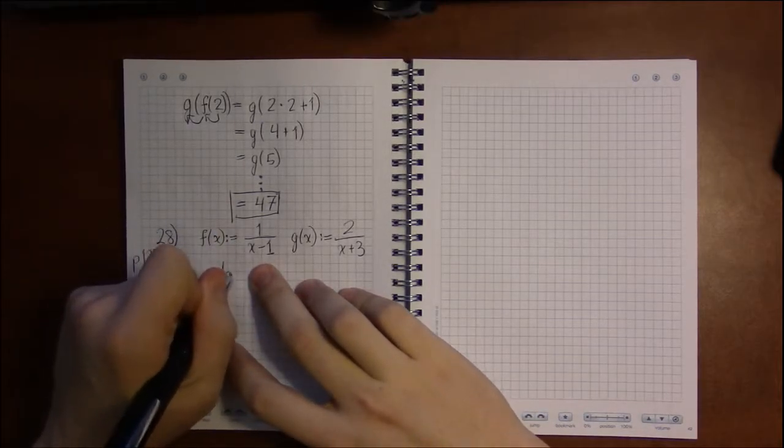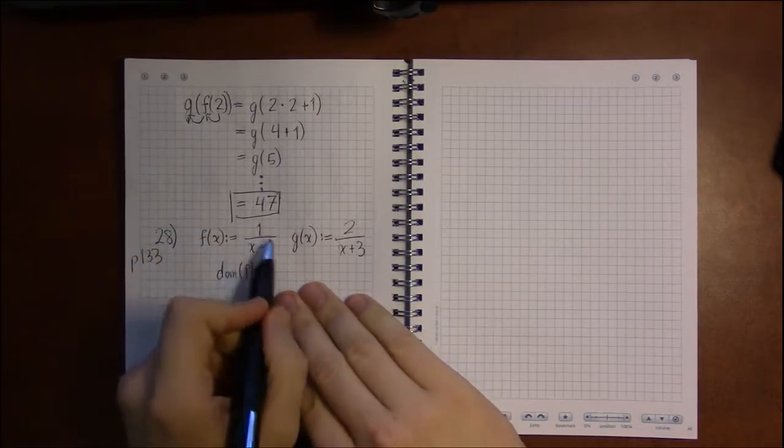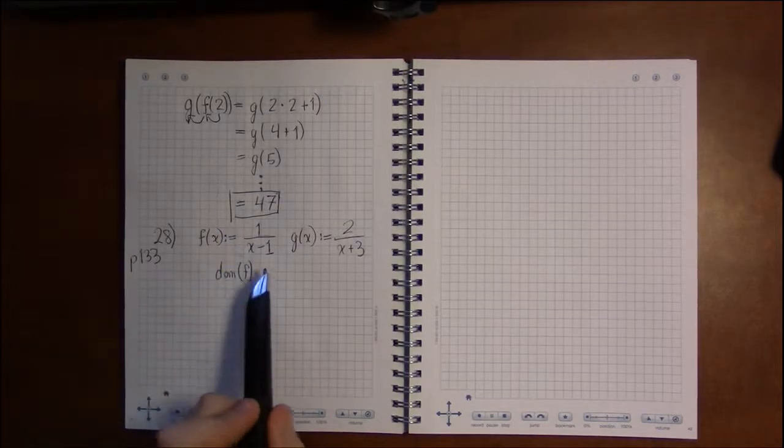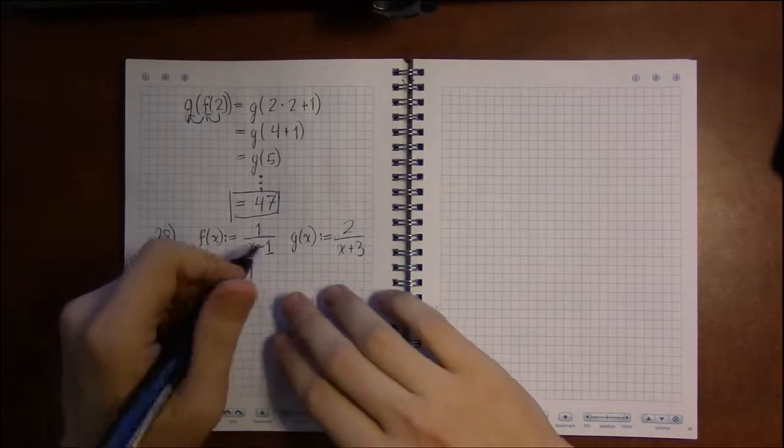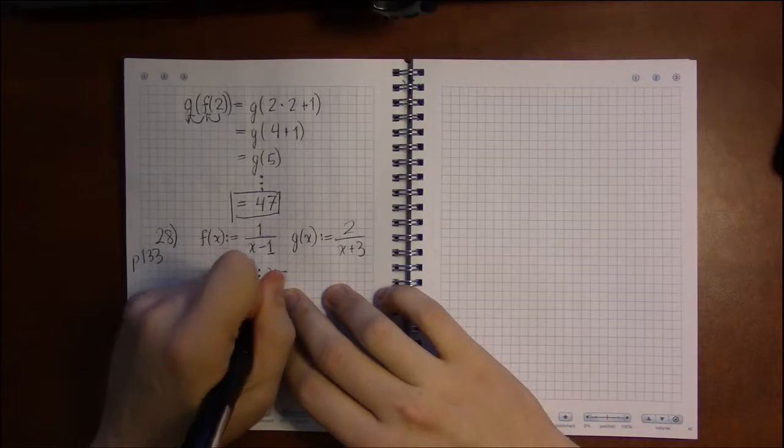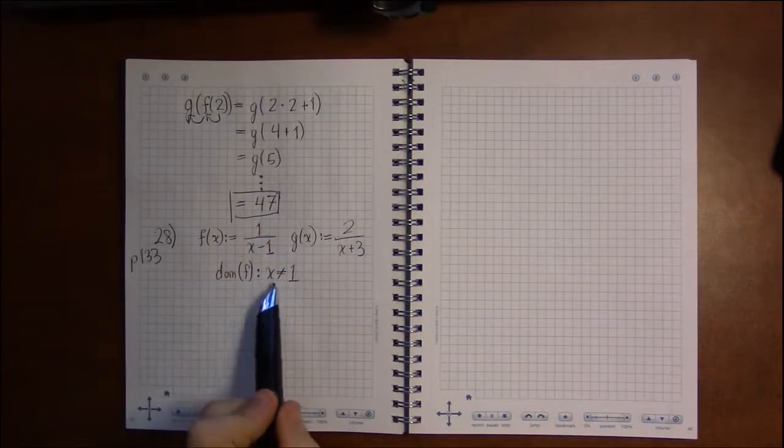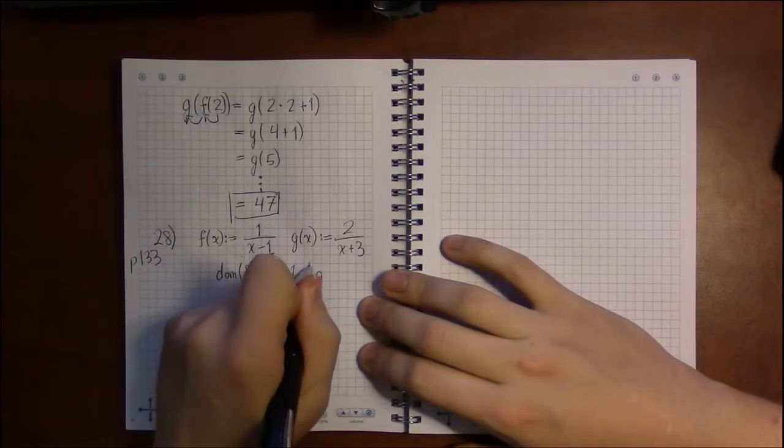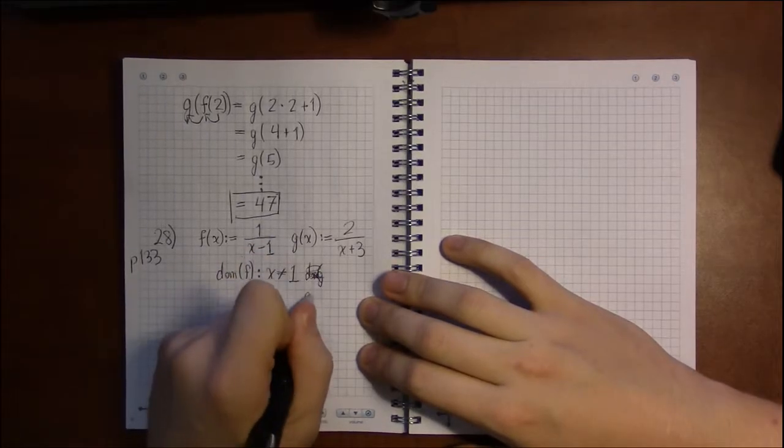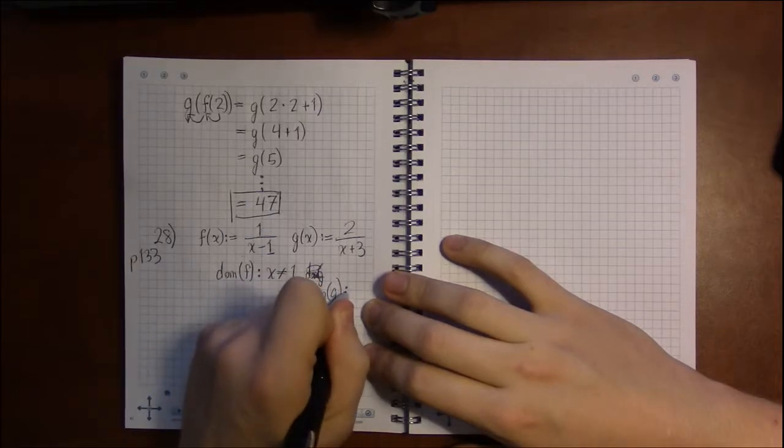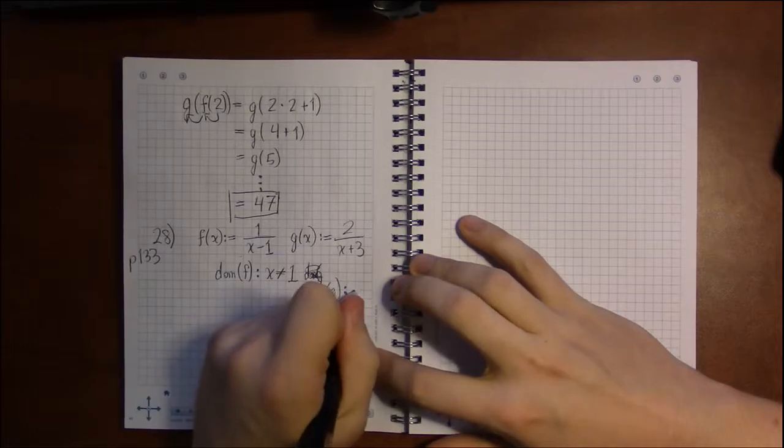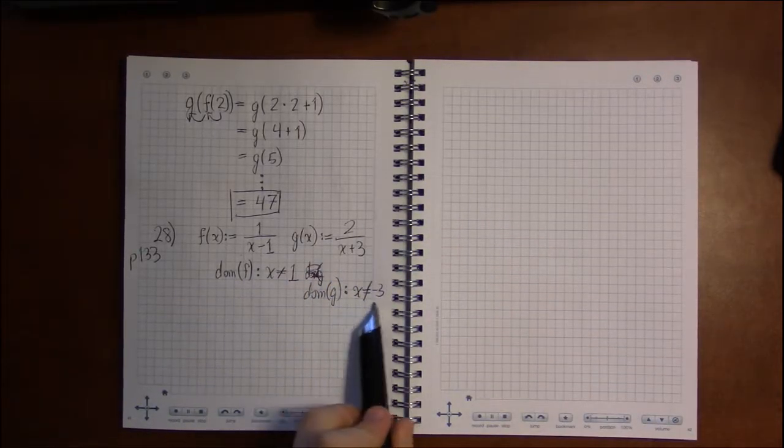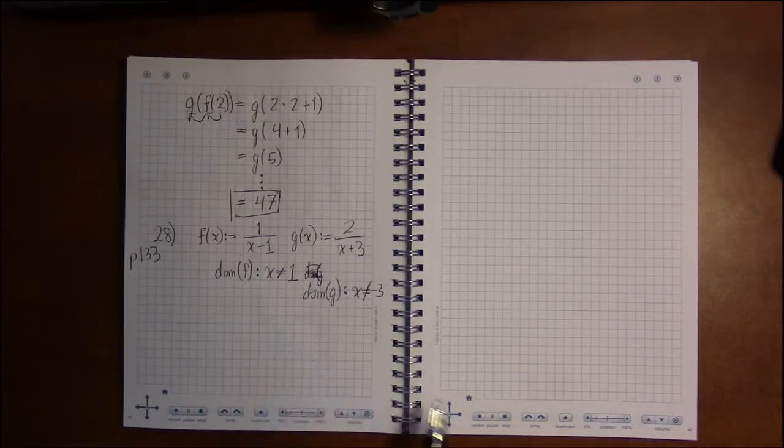So before we do any of that, let's figure out what the domain of f and the domain of g is. The domain of f: no square roots, so we don't have to worry about those, but we do have a denominator. The denominator can't be 0. The only way the denominator could be 0 is if x is equal to 1, and we don't want the denominator to be 0, so we say that x should not be 1. If x is not 1, we're never going to divide by 0. And over here for g, the domain of g is the same idea: no square roots, only a denominator. The value that makes the denominator 0 is x equals minus 3. We don't want that to happen, so we say x can be anything but this value. We're going to need to keep these in mind.